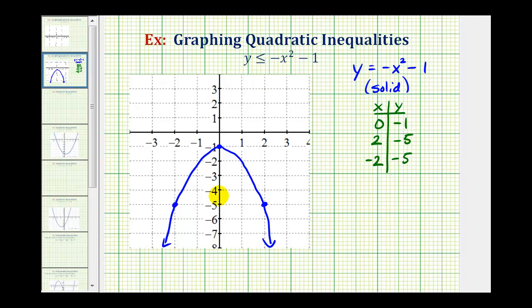Now we need to determine if we're going to shade inside the parabola in this region here, or outside the parabola in this region here. To do this, we'll select a test point. The easiest test point to select is the origin, as long as it's not on the graph, which it's not. The origin has coordinates zero, zero.